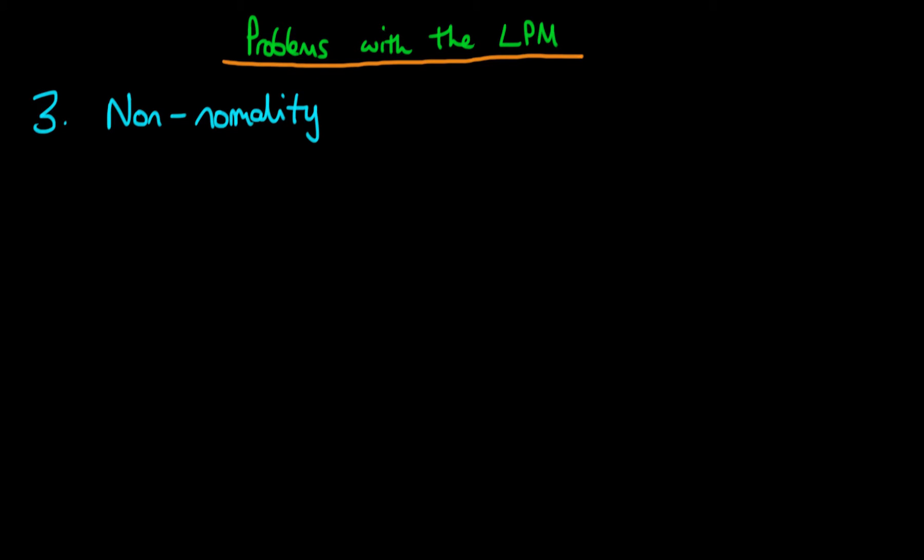In this third and final video about the problems with the linear probability model, we're going to talk about the issue of non-normality in regard to the errors.